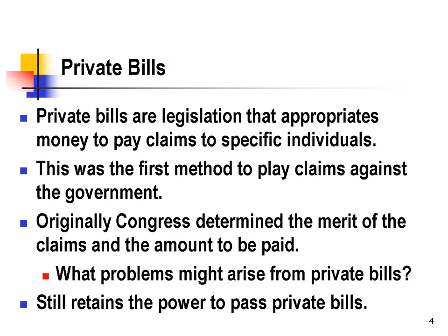While the Fifth Amendment created a right to compensation if the government took your property, it didn't provide any mechanism to pay for that compensation or to evaluate your claim. Originally, Congress would pass private bills to compensate people for damages for takings and other government actions. Private bills are legislation that has to pass through bicameralism and presentment, and it awards specific money damages to private individuals or other legal entities.